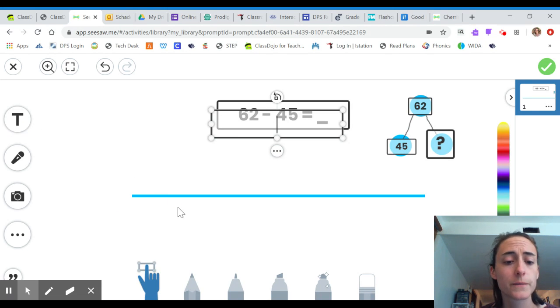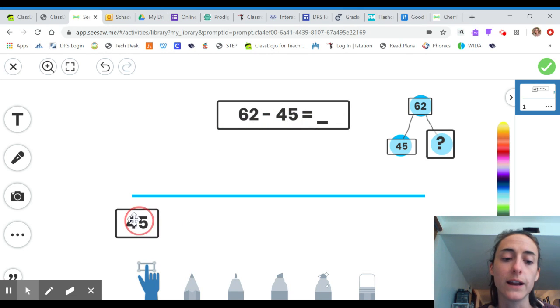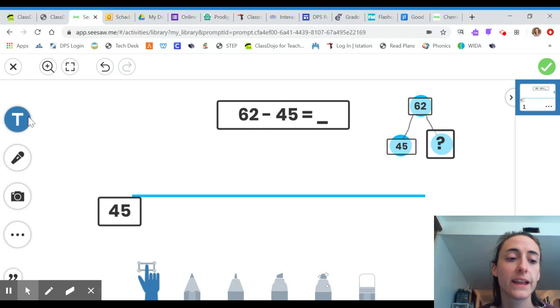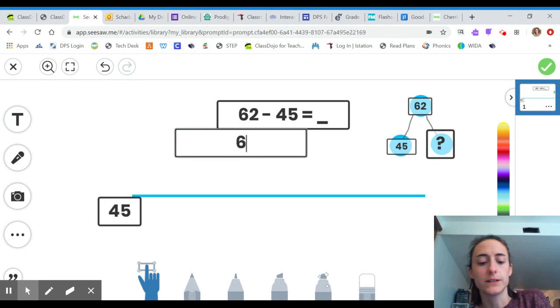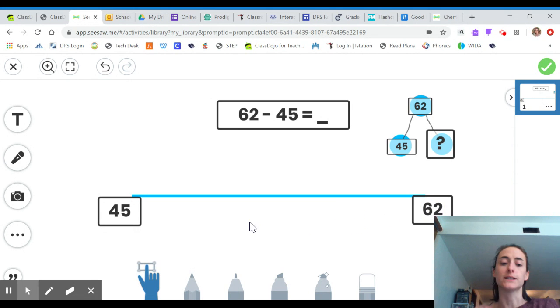So we're going to start with the 45 at the beginning of our number line. And we want to count until we get to 62 to find out what's in between 45 and 62. 45 plus something is going to make 62.